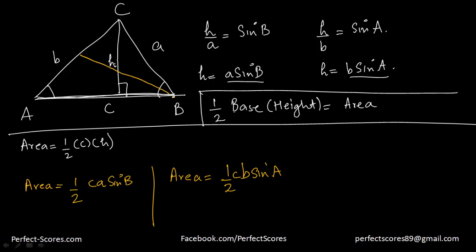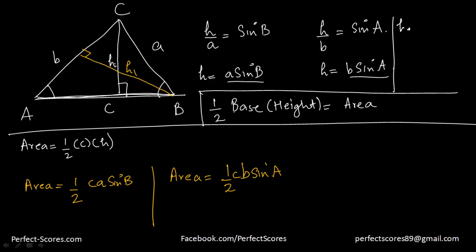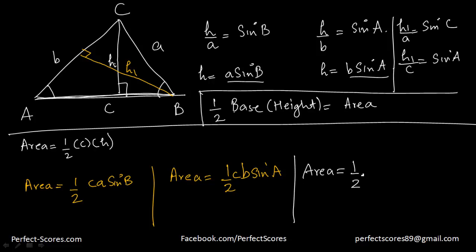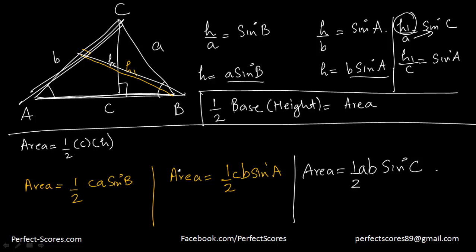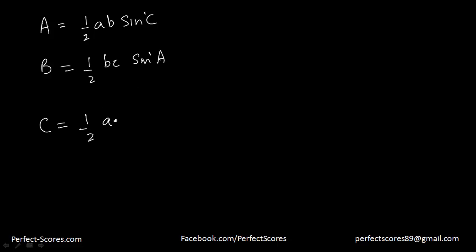Similarly, if I take another height H1 — H1 over A is equal to sin C, and H1 over C is equal to sin A. So if I want to involve sin C as well, the area of the triangle equals half times base B times H1, where H1 equals A sin C. So area of a triangle can be equal to half AB sin C, or half AC sin B, or half BC sin A.